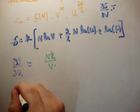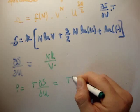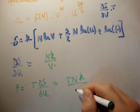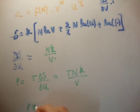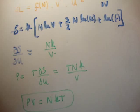That means that P is going to be equal to T times del S del V, which is T N K over V. Or PV is equal to N K T, which is the ideal gas law.